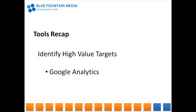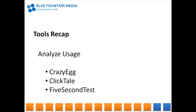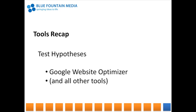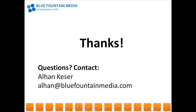To recap the tools that I presented: to identify what pages to optimize, I used Google Analytics. To analyze usage of these pages, I used Crazy Egg, Clicktail, and 5 Second Test. And for testing, I used Google Website Optimizer, as well as all of the tools mentioned earlier. Thanks, and I hope these tools will be valuable in conducting conversion optimization. Also keep in mind that there are many different tools out there, and it's always good to keep trying out new ones.